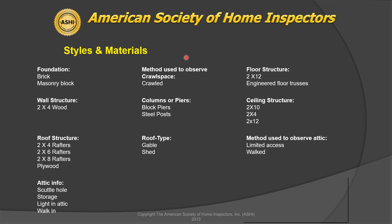We had a crawl space — how did you observe it? I crawled it. It had block columns, and someone had come in later and added steel posts that were actually on concrete footers, so I put the steel posts in there. What type of roof? It had a gable roof and a low shed roof. In the crawl space, someone had done some refurbishment — they had added engineered floor trusses and there are two by 12s. Same with the ceiling structure. The low attic was easy to walk; the high one was very limited.